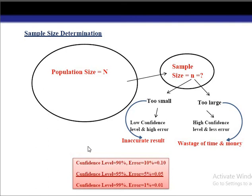We have to decide which is more important: confidence level or error. Obviously we want to maximize our confidence level and minimize our error — we want a high confidence level and a low chance of error. The standard confidence levels are: 90% confidence level with 10% error, 95% confidence level with 5% error, and 99% confidence level with 1% error. Generally we go with 95% confidence level associated with 5% error.